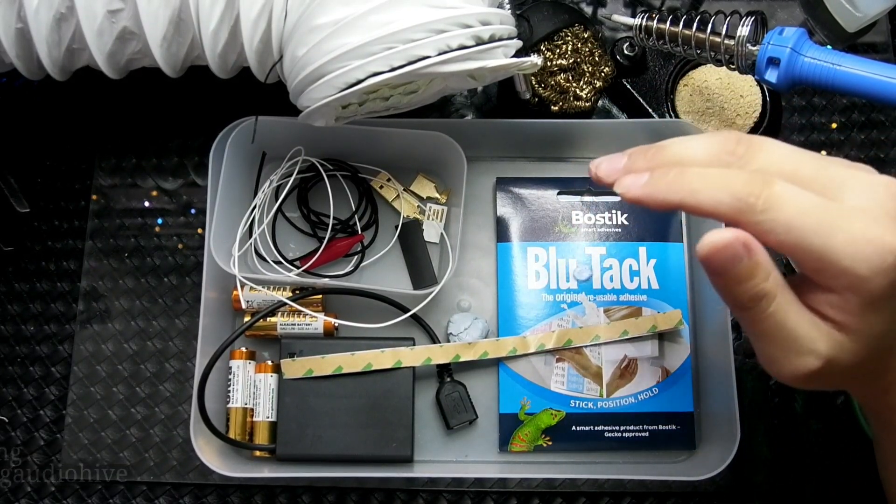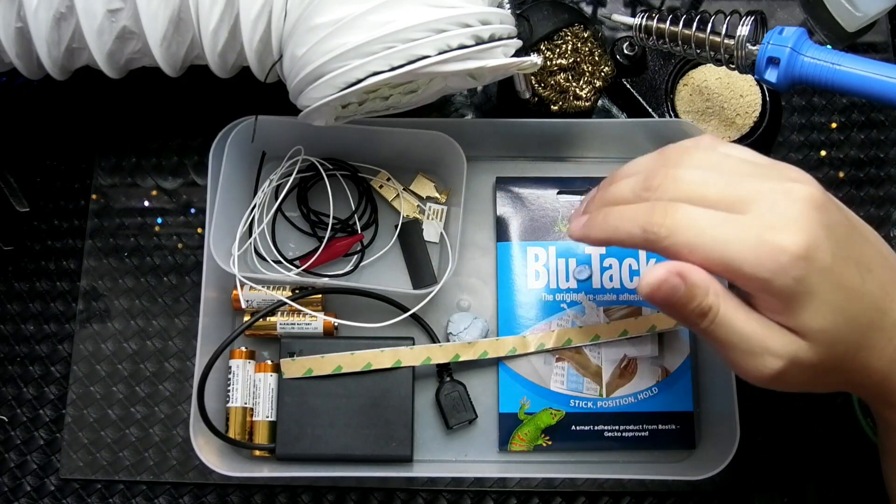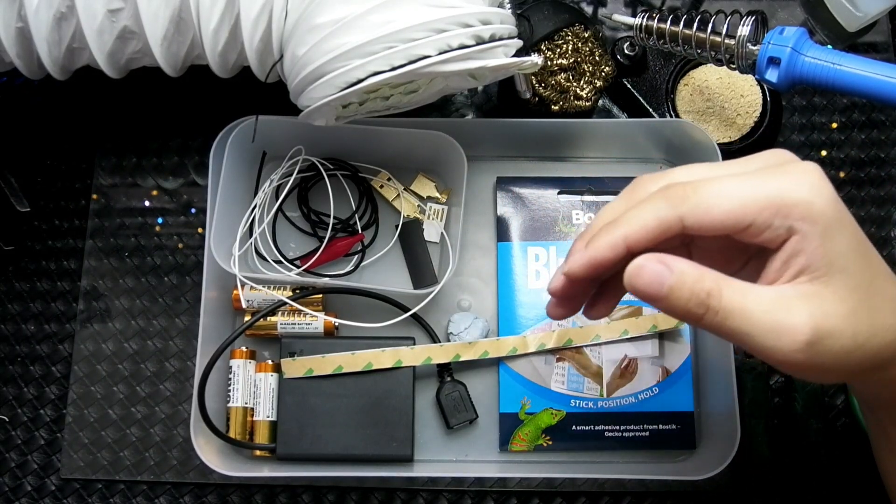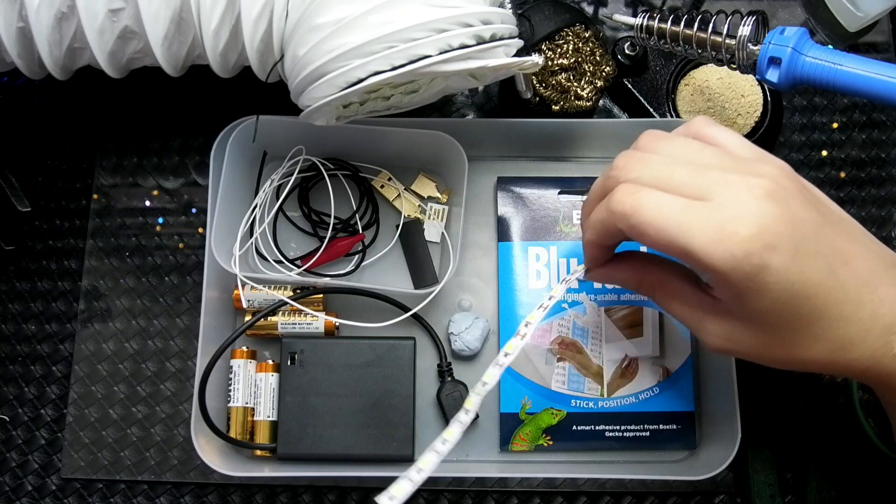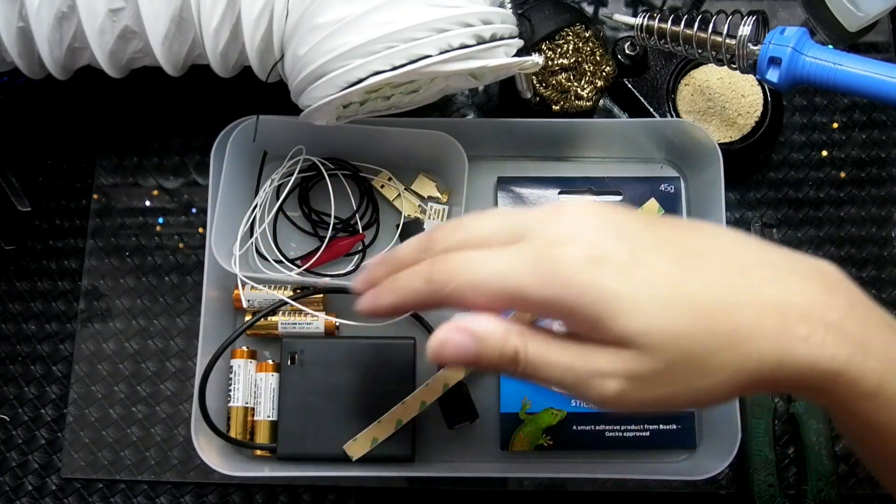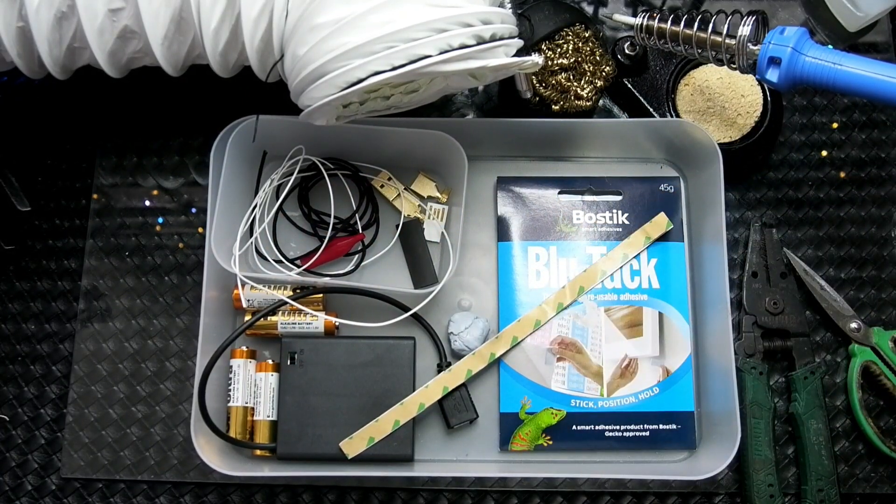So today we will be going through how to build your own DIY tray, organizer tray for your tabletop. This is for waste management, for your rubbish and to put your parts together all in one place. It makes it a very easy job.